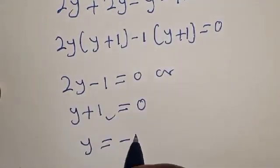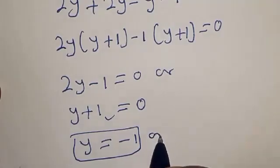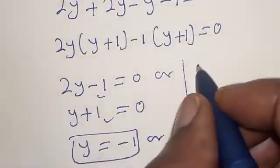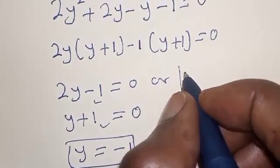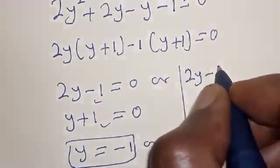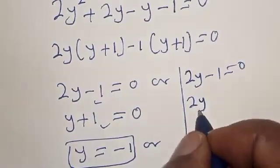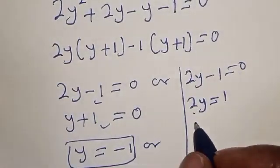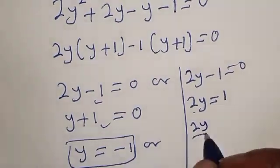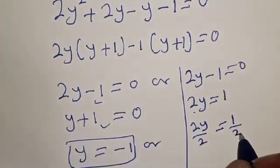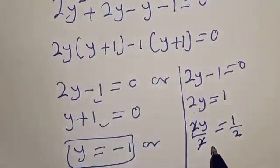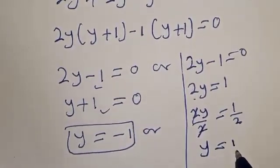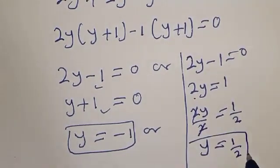From y plus 1 equals 0, y is equal to minus 1. From 2y minus 1 equals 0, 2y is equal to 1. Dividing both sides by 2, y is equal to 1 over 2.